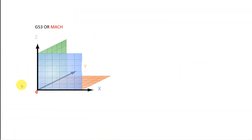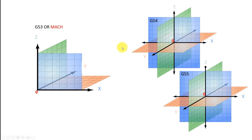The first thing you need to do is home all your axes on your CNC machine. You need to do that so you find your zero position in the MAC coordinate system. In my case it is down to the left. Once this is done, you have set up your machine coordinates, and this works together with the other coordinate systems called G54 and G55.